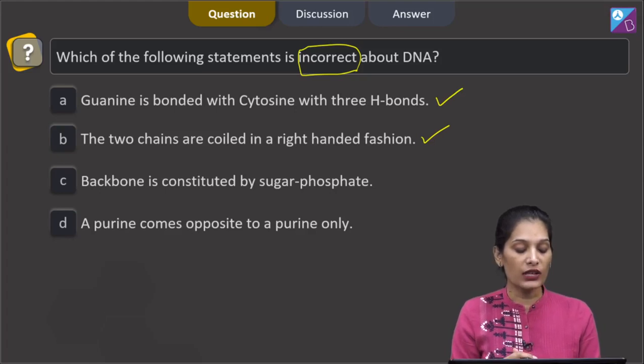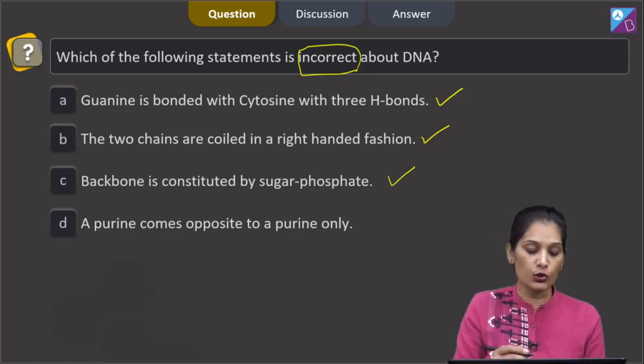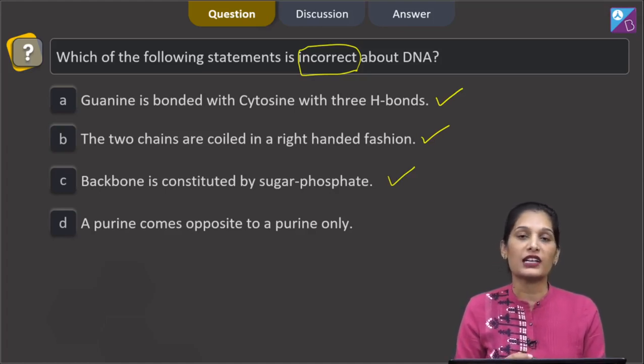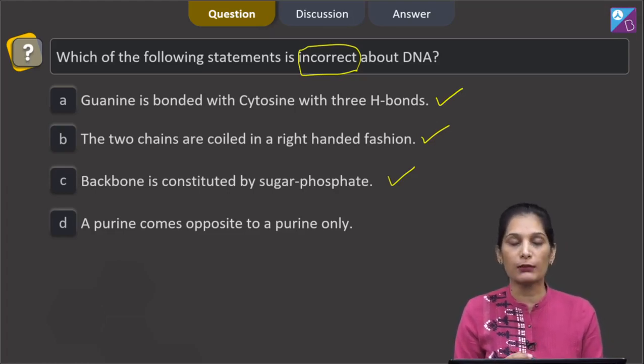C, backbone is constituted by sugar phosphate. This is also true. Backbone of DNA is constituted by sugar phosphate or we say that sugar phosphate constitute the backbone.